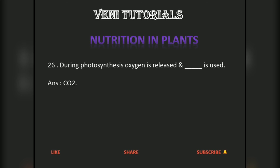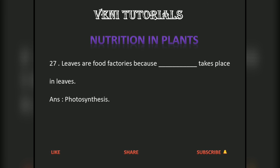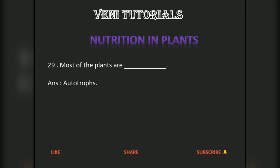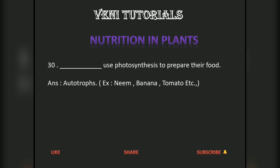During photosynthesis, oxygen is released and CO₂ is used. Leaves are the food factories because photosynthesis takes place in leaves. Food is a combination of carbohydrates, proteins, fats, vitamins, and minerals. Most plants are autotrophs — they use photosynthesis to prepare their food. Examples include banana, tomato, etc. Thank you, please like, share, and subscribe.